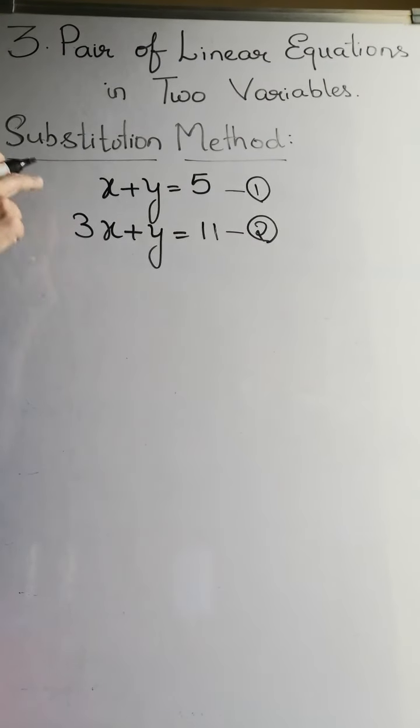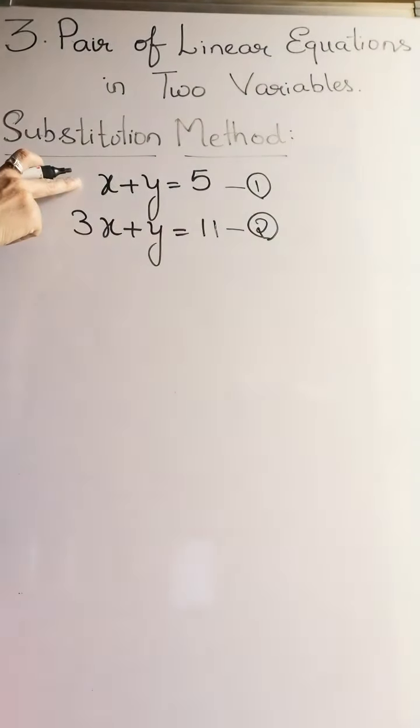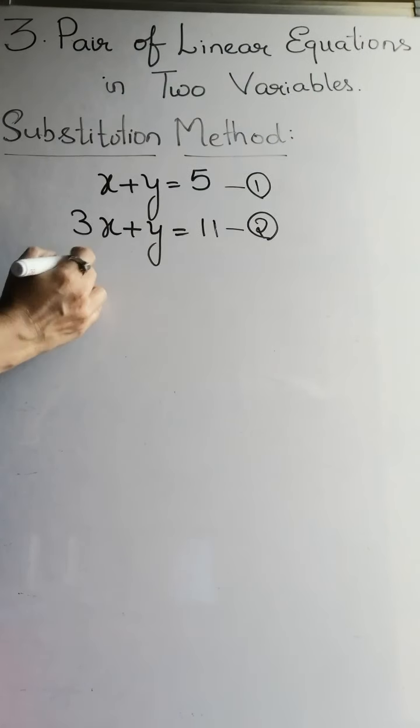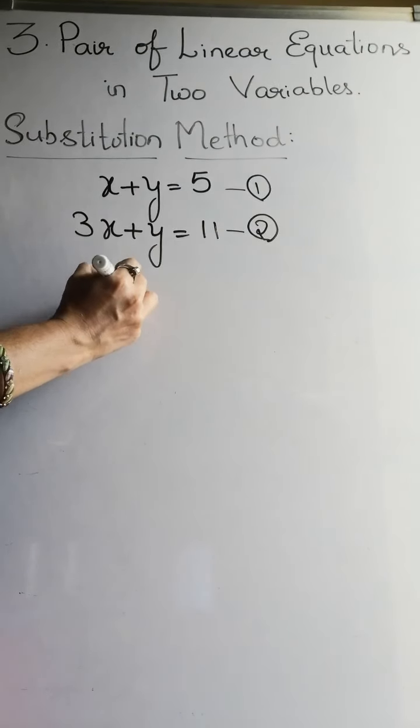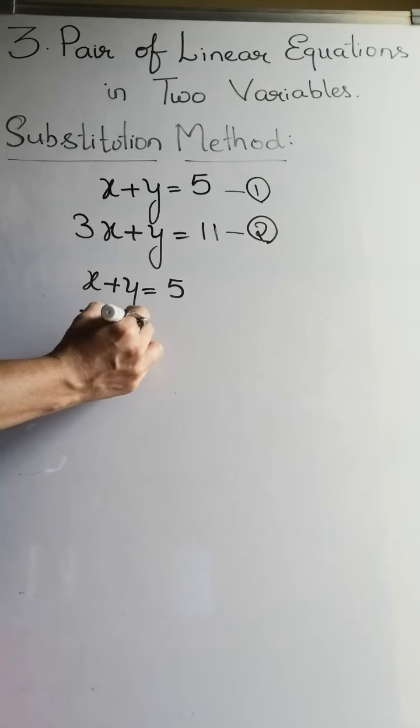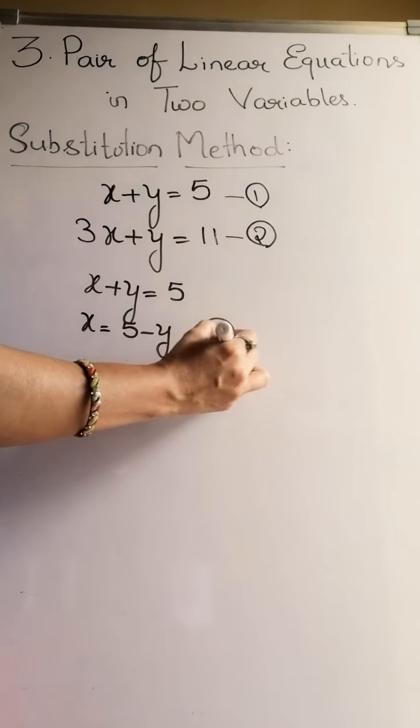Now in substitution method we will take one of the equations and bring out the value for one of the variables. Suppose first equation we have as x plus y equals 5. So x equals 5 minus y. Let this be the third equation.